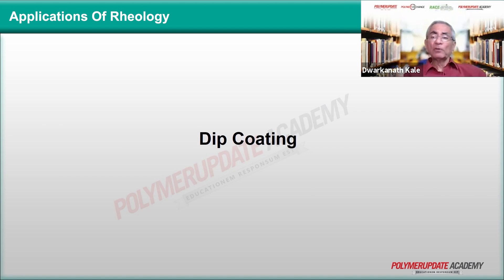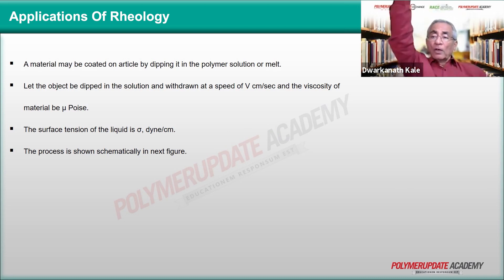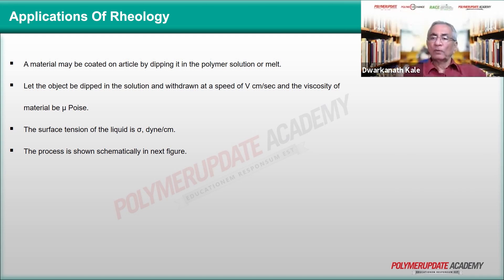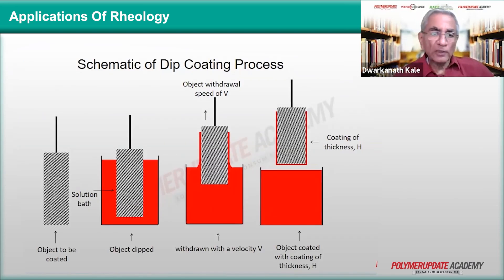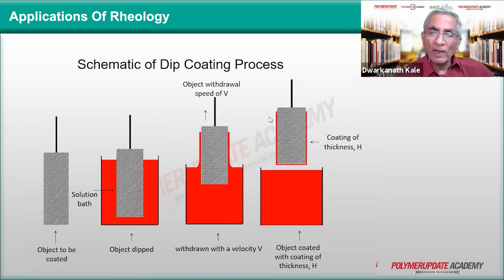Dip coating is a process used for making capsules or for coating an article with a decorating or protecting material, such as in electrical applications. When you dip the article, the important parameters are how much time the material requires to coat from all sides, and when you withdraw it, how much material remains on the article and how much flows off. This depends on the rheology — the viscosity — and the coating thickness is related to both withdrawal speed and viscosity. The object to be coated is dipped into the solution and withdrawn with a velocity V, causing the material to coat the object.